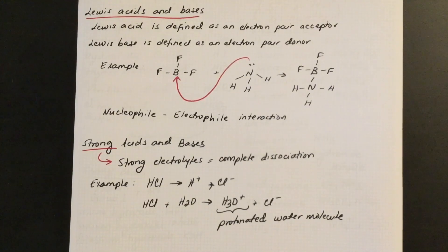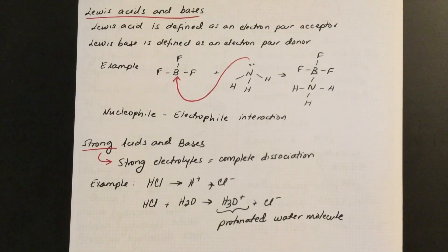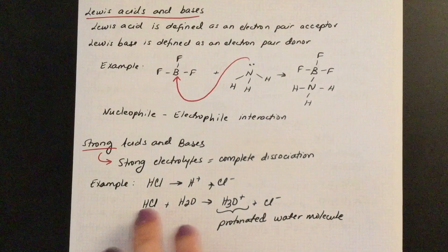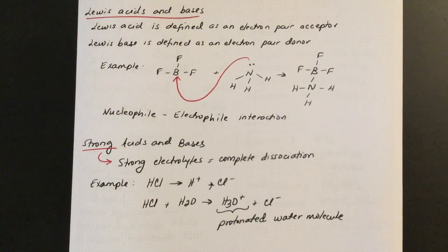Strong electrolytes undergo complete dissociation. For example, sodium chloride is a soluble ionic compound — when dissolved in water, the ionic bond between Na⁺ and Cl⁻ breaks completely, giving only the individual ions. Similarly, a strong acid like HCl in water breaks entirely apart, giving only H⁺ and Cl⁻ in solution because a strong acid is a strong electrolyte. There are other strong acids listed as well.